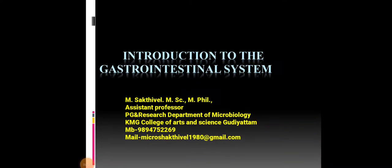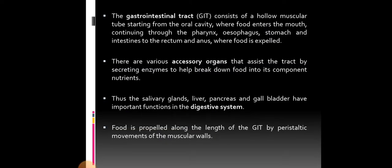Good morning. Today we are going to see about introduction to the gastrointestinal system. The gastrointestinal tract (GIT) consists of a hollow muscular tube starting from the oral cavity where food enters the mouth, continuing through the pharynx, oesophagus, stomach, and intestine to the rectum and anus where food is expelled. Various accessory organs assist the tract by secreting enzymes to help break down food into its components called nutrients. The salivary glands, liver, pancreas, and gallbladder have important functions in the digestive system. Food is propelled along the length of the GIT by peristaltic movements of the muscular walls.